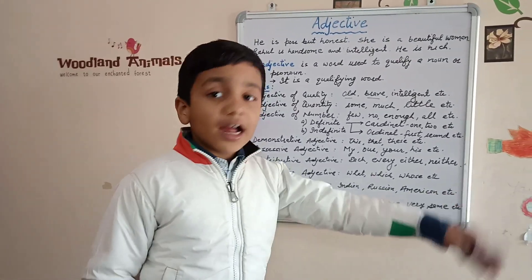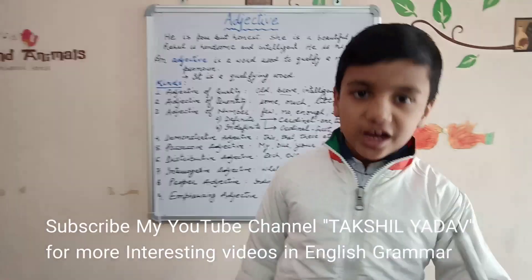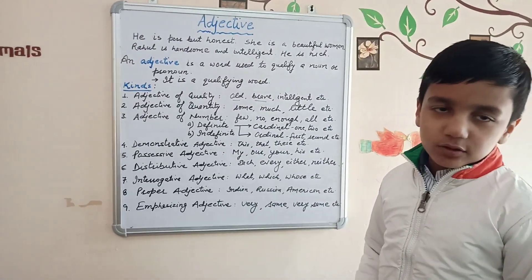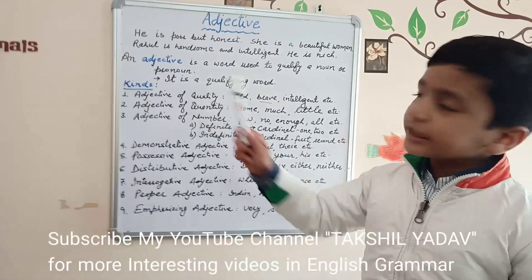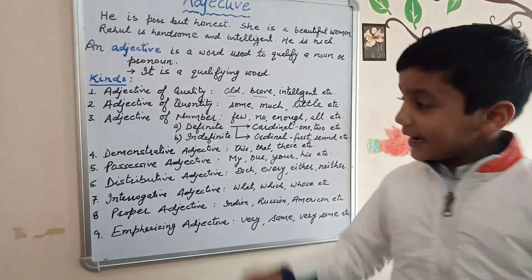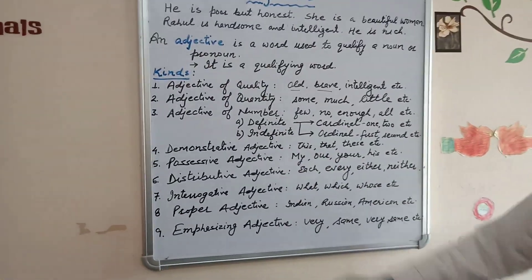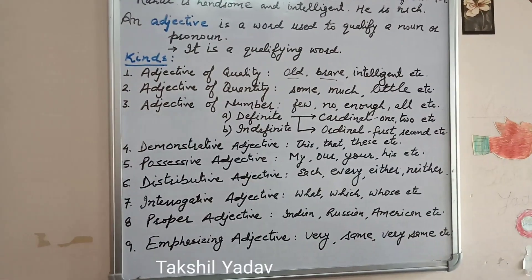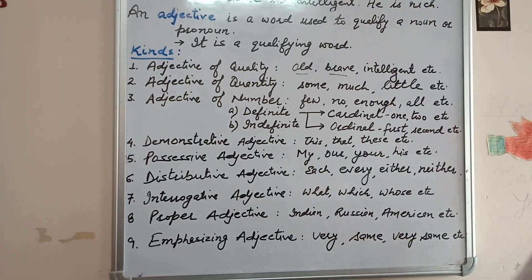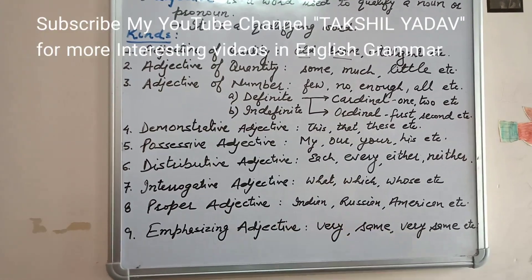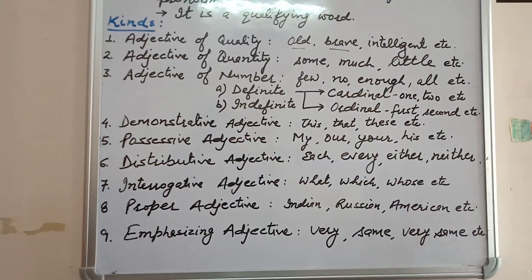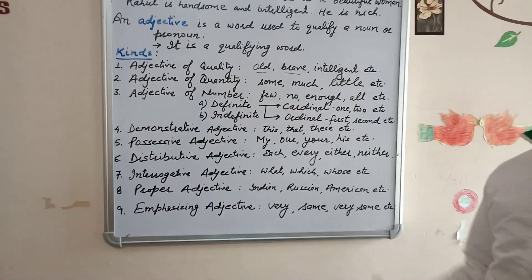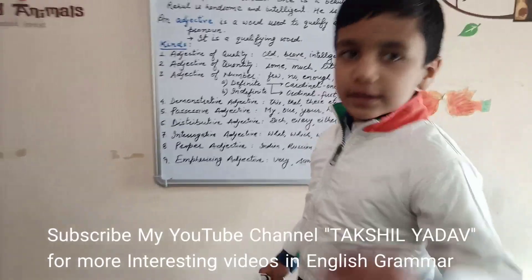Now, kinds of adjectives. There are many different kinds of adjectives. They are: adjective of quality, adjective of quantity, adjective of number, demonstrative adjective, possessive adjective, distributive adjective, interrogative adjective, proper adjective, and emphasizing adjective. Now let us study about each one of them.